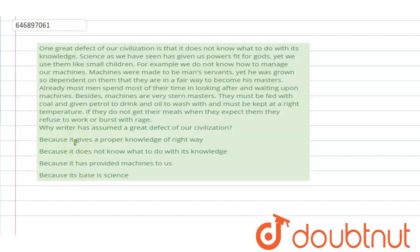So let's have a look at the paragraph. One great defect of our civilization is that it does not know what to do with its knowledge. Science, as we have seen, has given us power fit for gods, yet we use them like small children. For example, we do not know how to manage our machines. Machines were made to be man's servants, yet he has grown so dependent on them that they are in a fair way to become his masters. Already, most men spend most of their time in looking after and waiting upon machines.